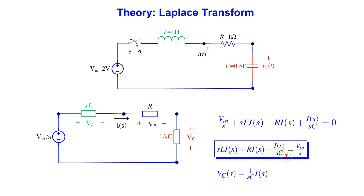Once we have solved for I(s), we can determine the voltage across the capacitor by multiplying the current with the impedance of the capacitor. We are interested to solve for both the current and the voltage across the capacitor. Once we write the circuit equation, we can then use Mathematica to efficiently solve for us.